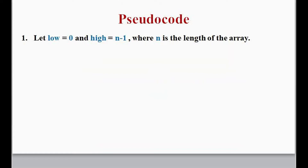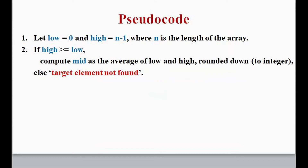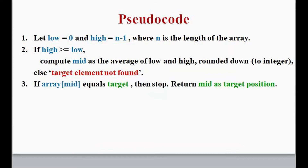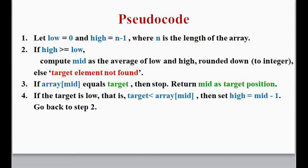Here n is the length of the array. We check the condition: high is greater than or equal to low. Then we compute mid, and three more conditions are checked. If array[mid] — the element at position mid — is equal to the target element to be searched, then we have found the target and we return mid as the target position.